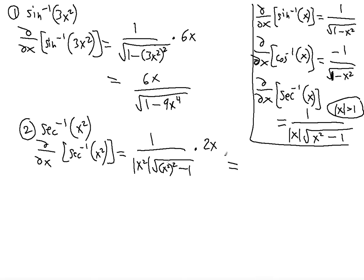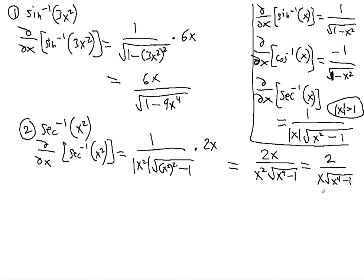So we have 2x over x squared times the square root of x to the fourth minus 1. Simplifying, the x in the numerator cancels with one factor from x squared, giving us 2 over x times the square root of x to the fourth minus 1. That's the final answer for the second example.